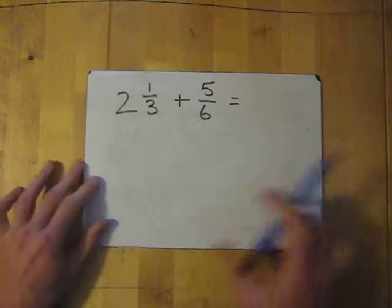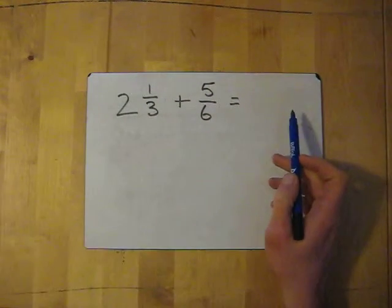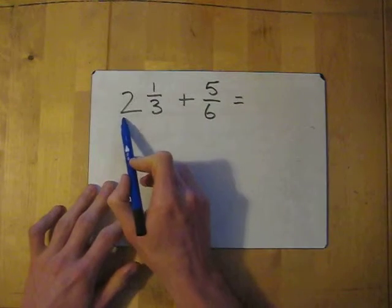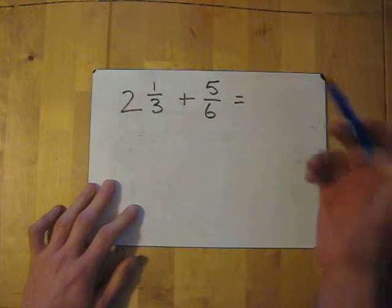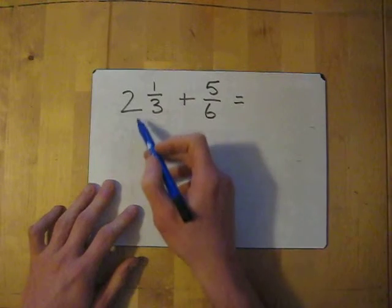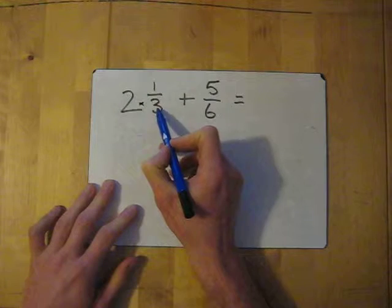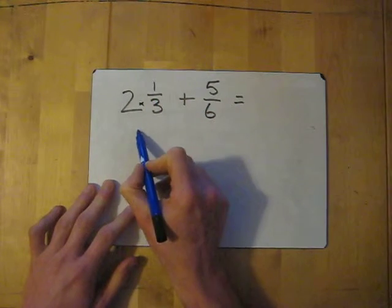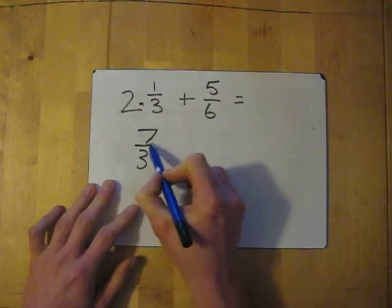The best way to show these success criteria is to actually have a go at a couple of examples. First off we've got two and a third — so we've got a mixed number — and we're going to add it to a fraction. The first thing I do is convert this into an improper fraction. So I ask MA for help: multiply the bottom two numbers, which gives me six, and then add the top number which is one, giving seven. So it is seven over three.